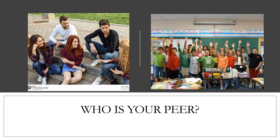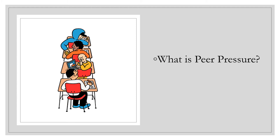Let's first talk about who is your peer. A peer is someone your own age — a classmate, someone who lives in your neighborhood, or a friend. Your teachers or parents are not your peers; adults in your life are not your peers. Peer pressure is when someone your age tries to get you to do something you don't want to do or something you know you shouldn't do.